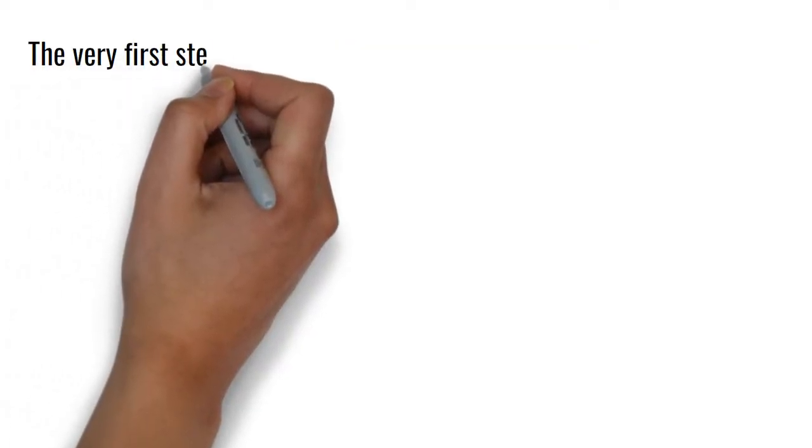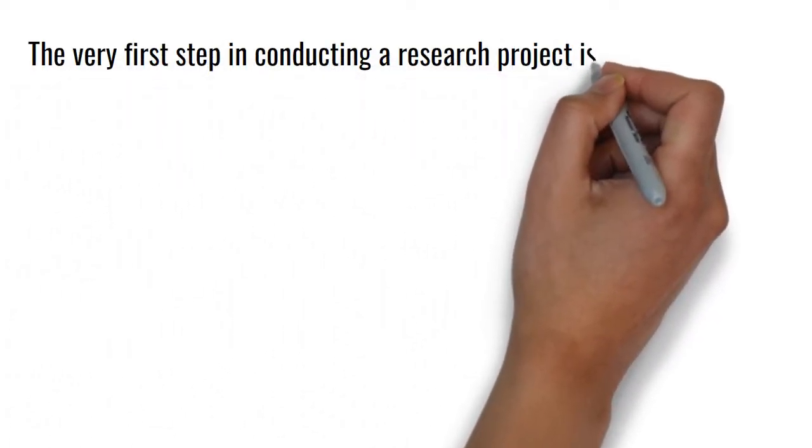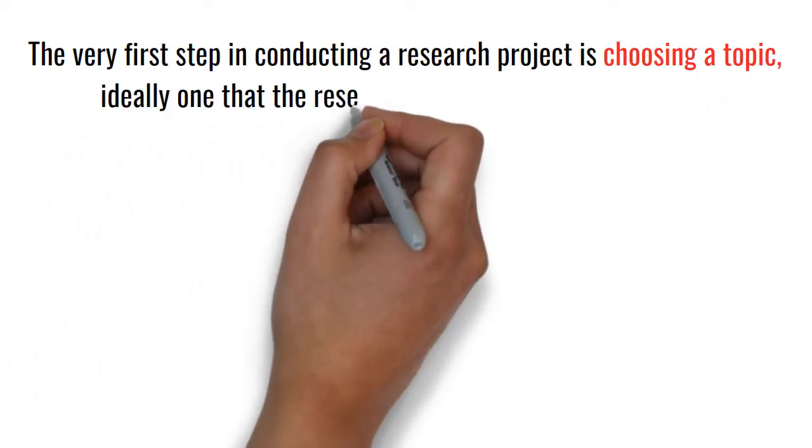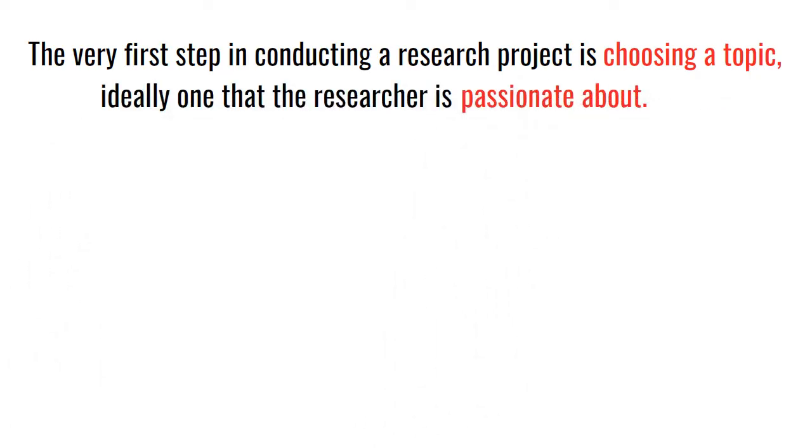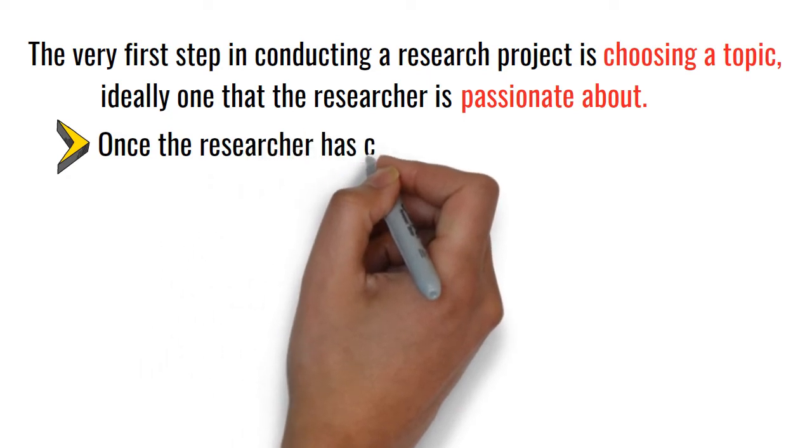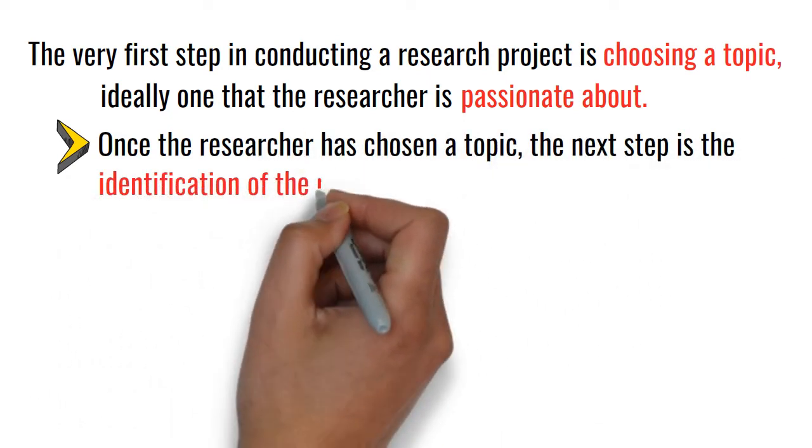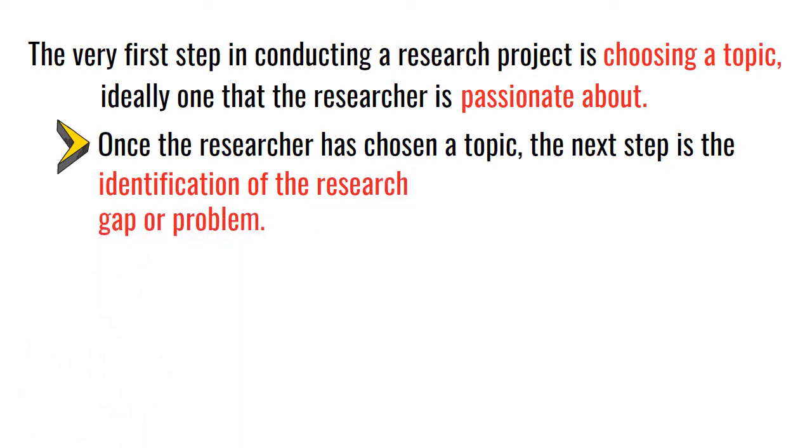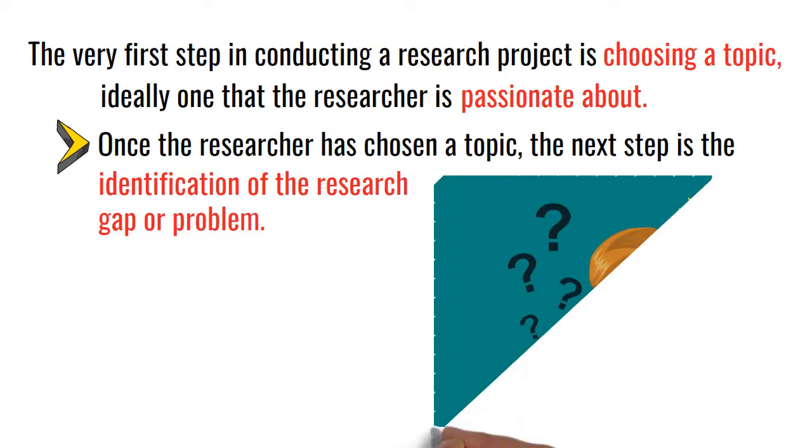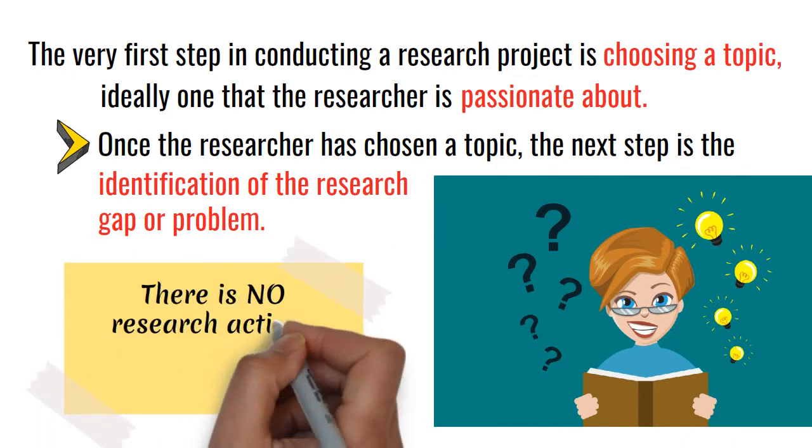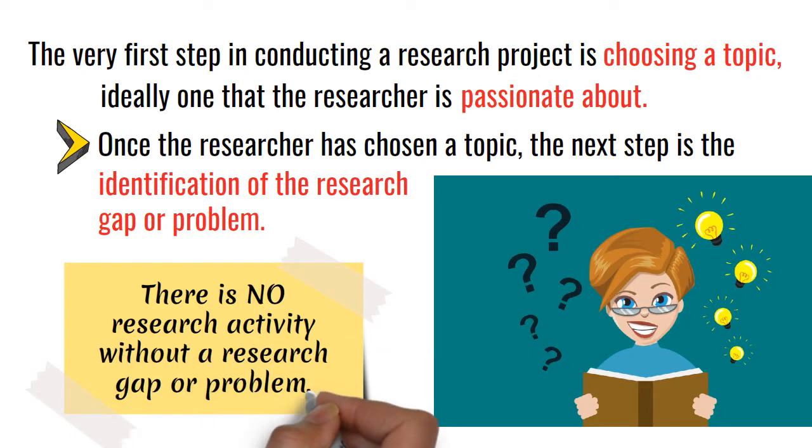The very first step in conducting a research project is choosing a topic, ideally one that the researcher is passionate about. Once the researcher has chosen a topic, the next step is the identification of the research gap or problem that the researcher wants to see addressed in the proposed research project. As we may already know, there is no research activity without a research gap or problem.